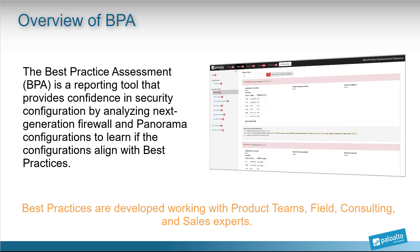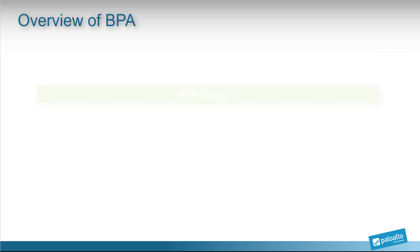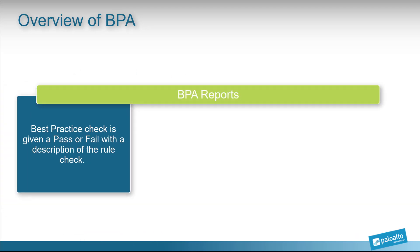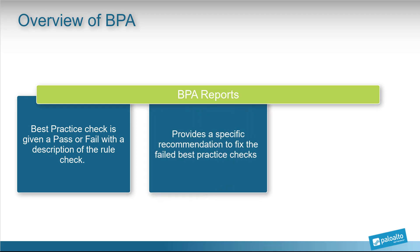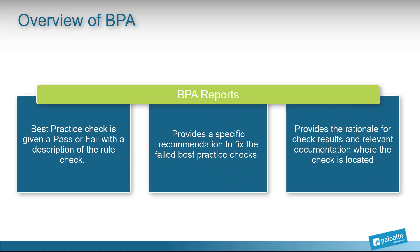Best practices are developed working with product teams, field, consulting, and sales experts. In the BPA reports, each best practice check is given a pass or fail with a description of the rule check. If the best practice check returns a failed check, the report will provide a specific recommendation to fix it. Included in the check results is the rationale and relevant documentation where the check is located.